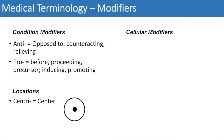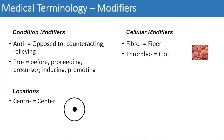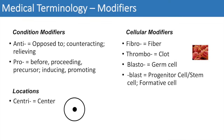The next category is cellular modifiers. 'Fibro' simply means fiber, so you can think of fibroblast. 'Thrombo' means clot — thrombocyte, thrombosis, or thrombocytopenia all relate to clot. 'Blasto' means stem cell; think of blastocele or blastocyst — a prefix meaning germ cell. The suffix 'blast' is very similar, meaning progenitor cell, stem cell, or formative cell — as in fibroblast. 'Clast,' as in osteoclast, is an absorbing or degradative cell — a cell that actually absorbs bone.